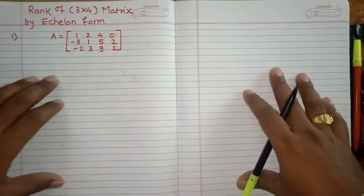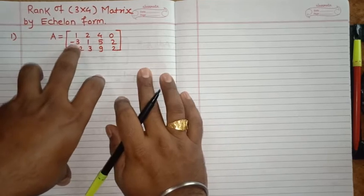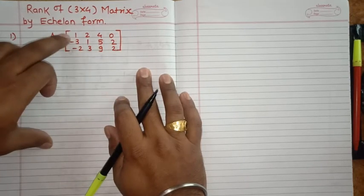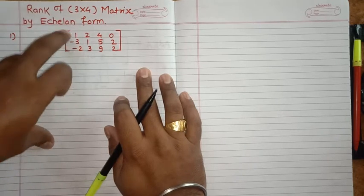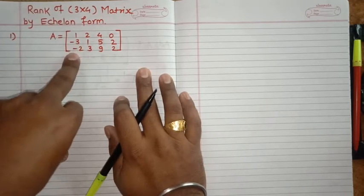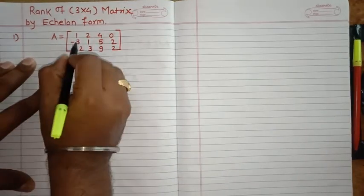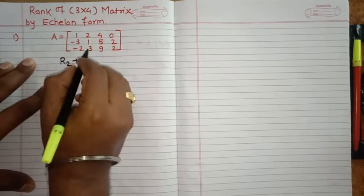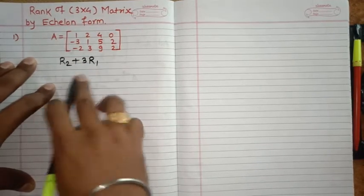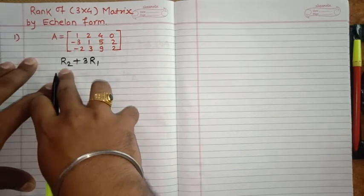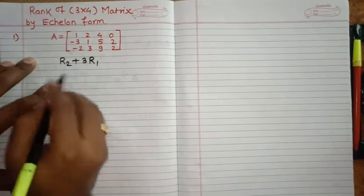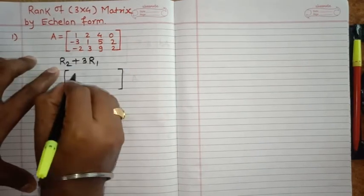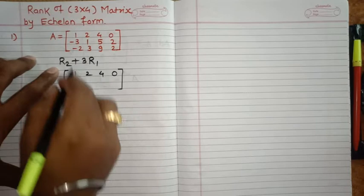So let's start. Now we have row 2 minus 3, row 1 is 1. If row 1 is multiplied by 3 and added to row 2, the result will be zero. Likewise you have to find out this operation. I will consider this as my first operation. So let's start. We have R1 as it is and R3 also as it is.